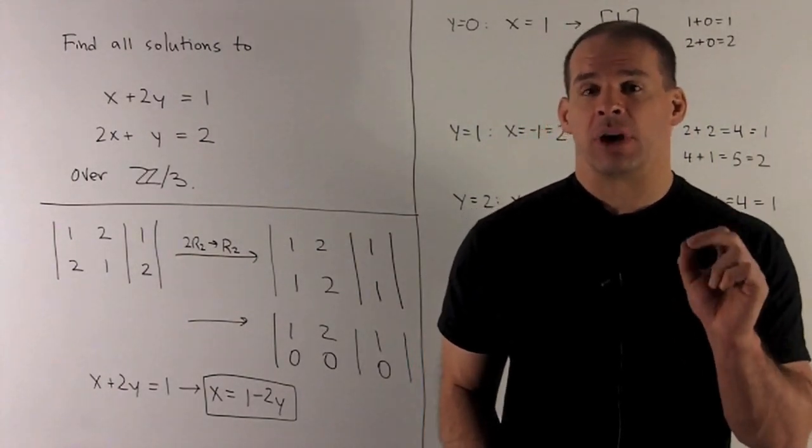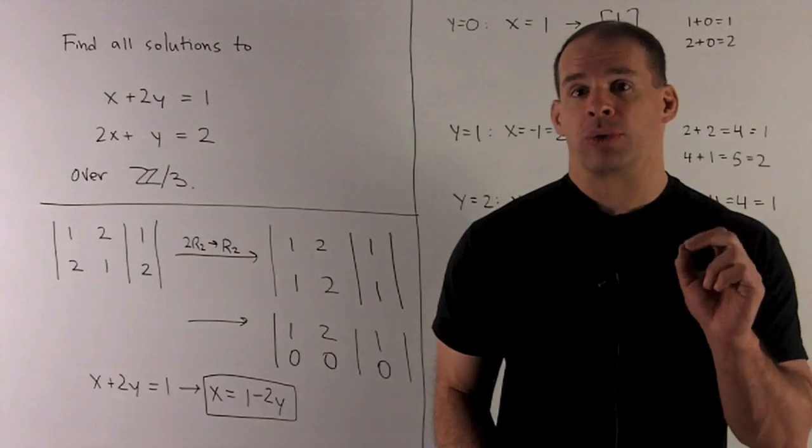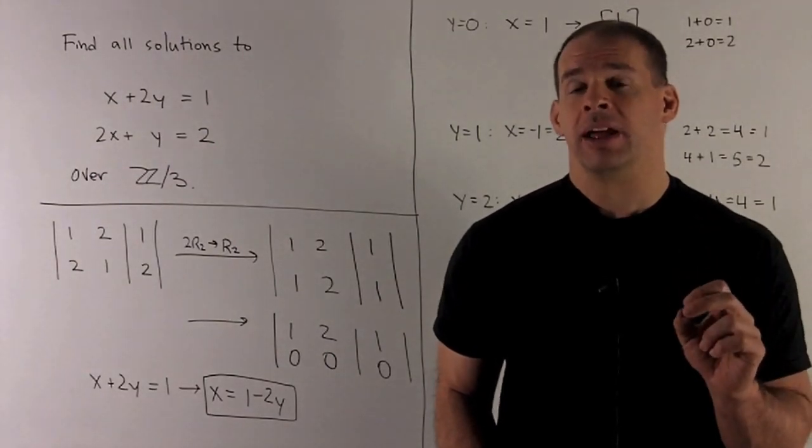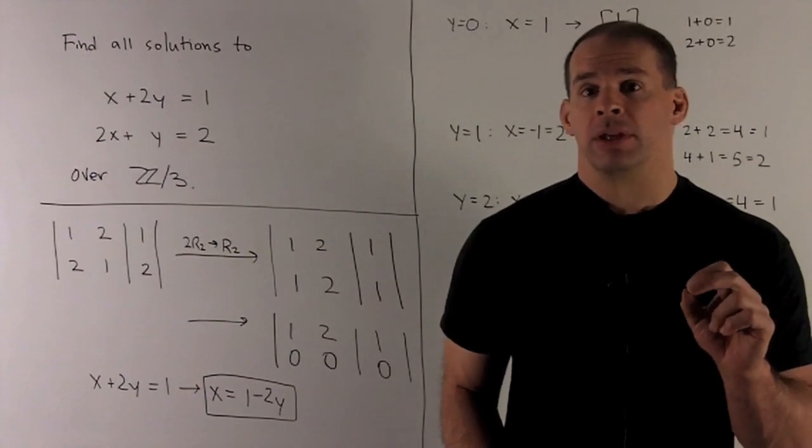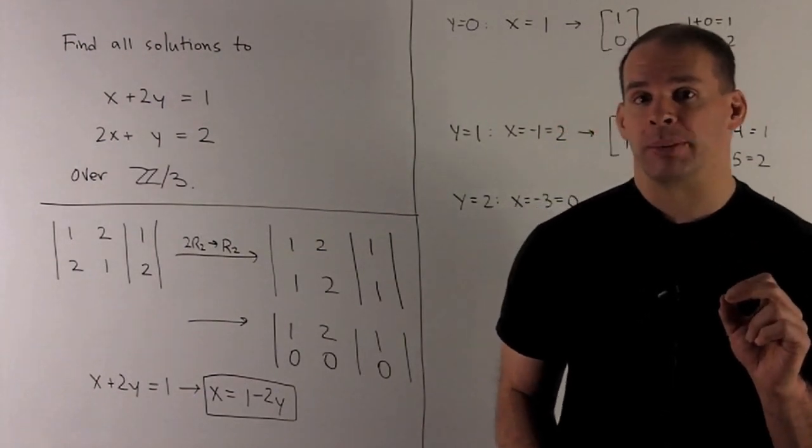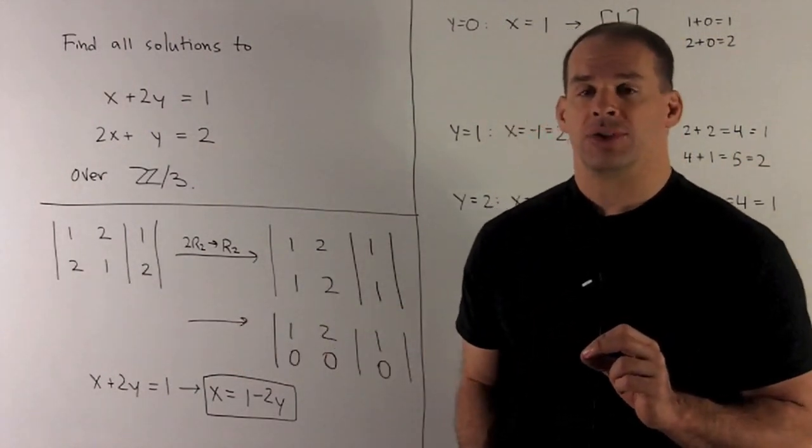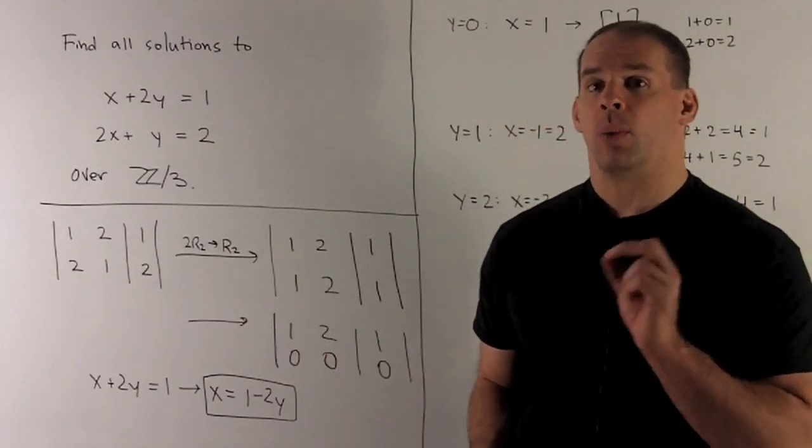Since I'm over Z3, we'll note if I multiply that row through by a 2, 2 times 2 is 4, I subtract off a 3, that becomes a 1. So our first operation is just going to be to multiply through my second row by a 2. That will give me 1, 2, 1.